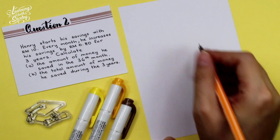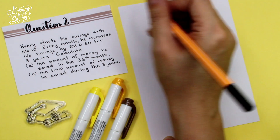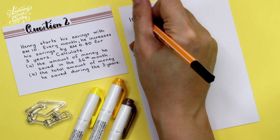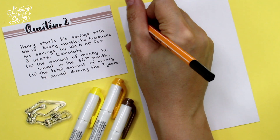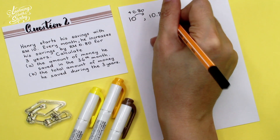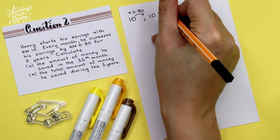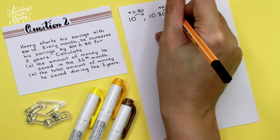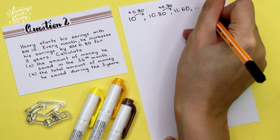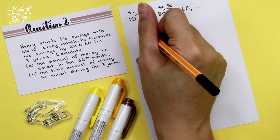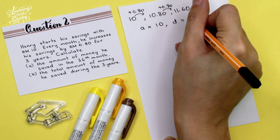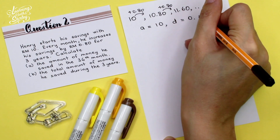First of all, we write down the progression. We start off with RM10, and then every month he increases by 80 cents. So we add 80 cents to get the second term, which is RM10.80. To get the third term, we add 80 cents again, which is RM11.60, and so on. From here, we know that the first term, A, is 10, and D is 80 cents, which is 0.80.